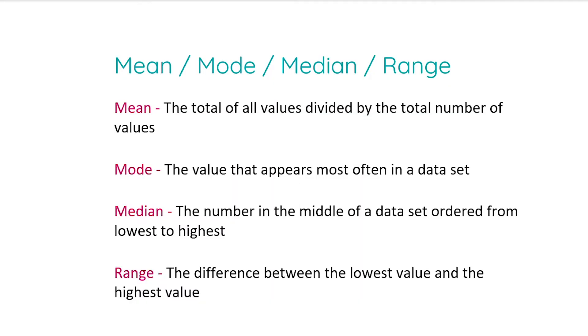So the mean is the total of all values divided by the total number of values. In other words, it's the sum of all the numbers and you divide it by the amount of values that you have.